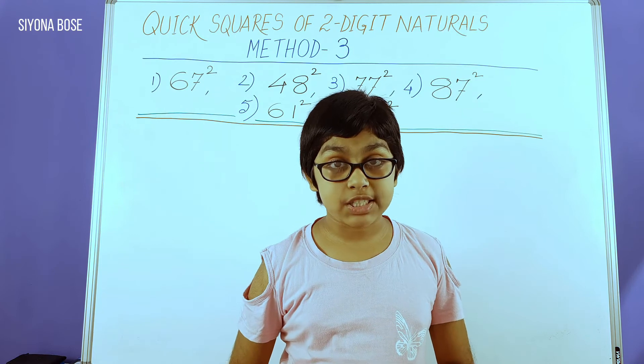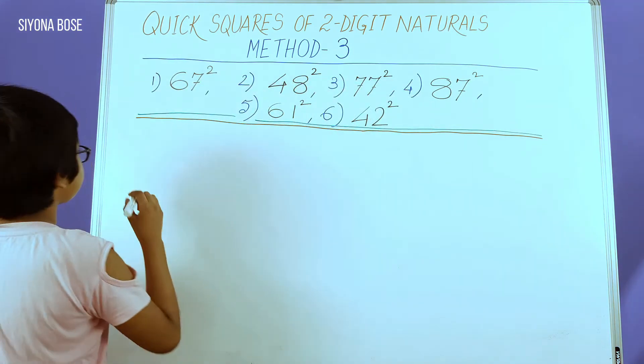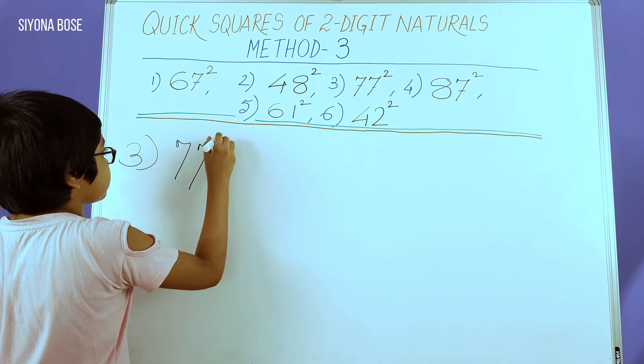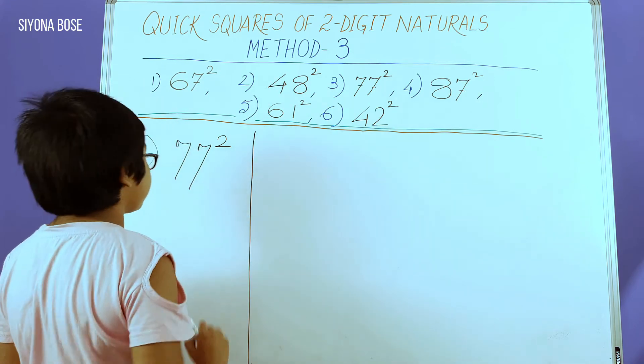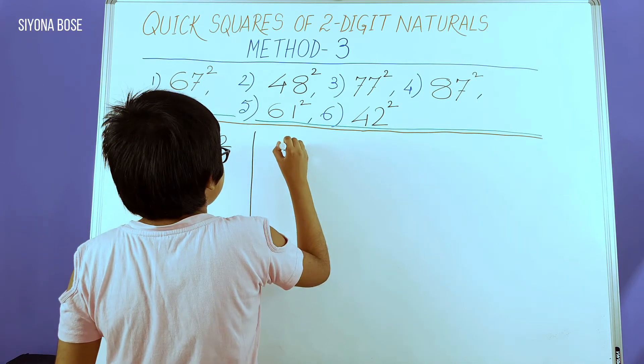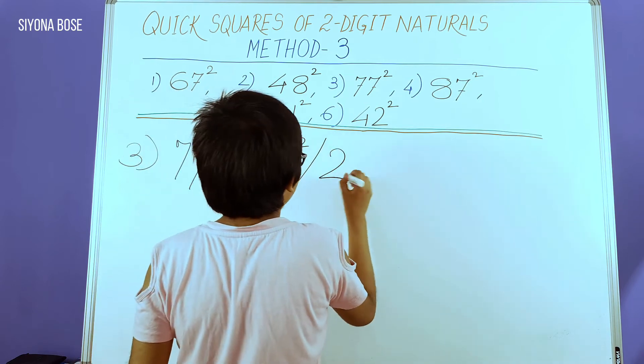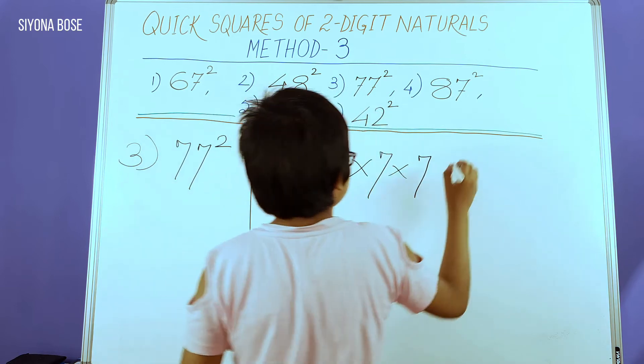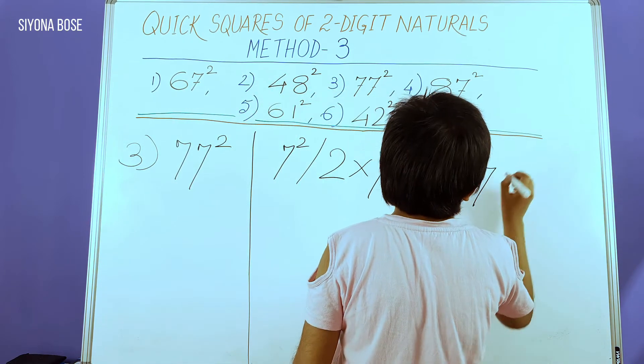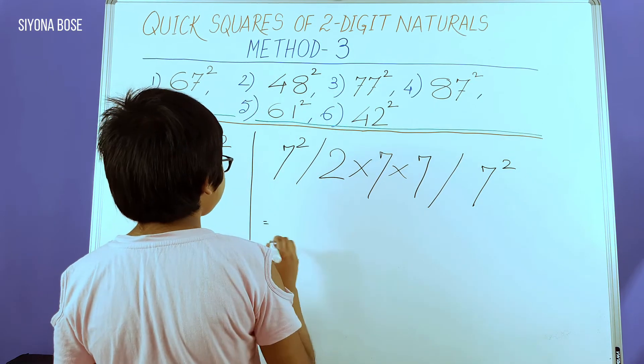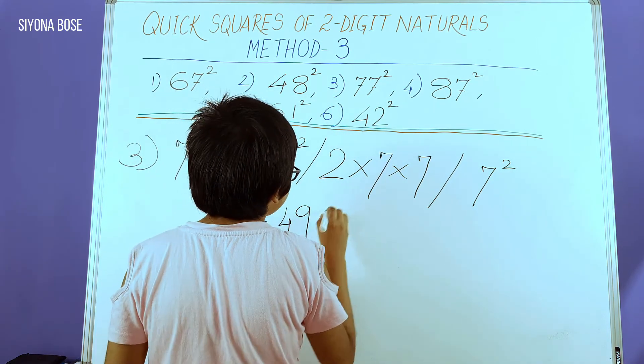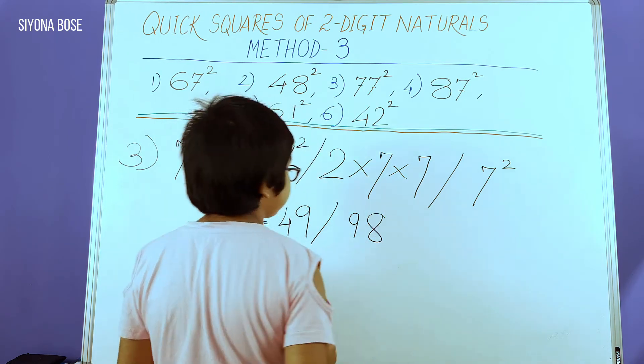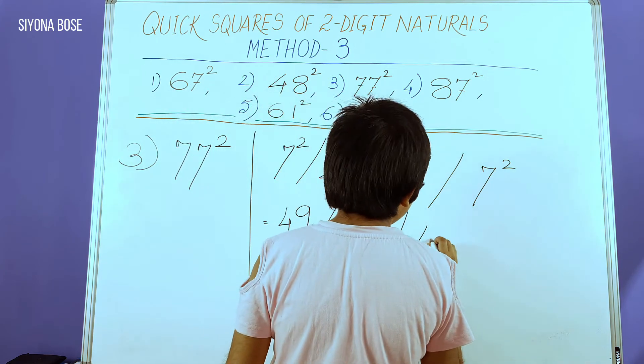Now we can move on to 77 squared. 7 squared, 2 times 7 times 7, and 7 squared once again. Simplifying it: 49, 2 times 7 times 7 gives us 98, and 7 squared is 49.